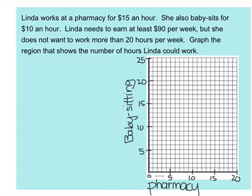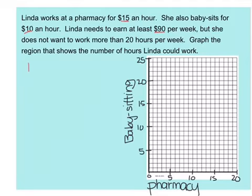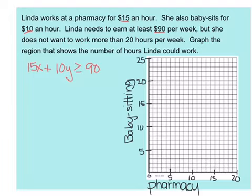Now we're looking at example number 7 — a word problem. Linda is working at a pharmacy for $15 an hour and also babysits for $10 an hour. Linda needs to earn at least $90 per week, but she does not want to work more than 20 hours. We're going to graph a region that shows the number of hours Linda could work. We have two equations: one that deals with the money using the 15, 10, and 90; and one that deals with the hours using 20. My pharmacy hours is my x value and my babysitting hours are my y value.